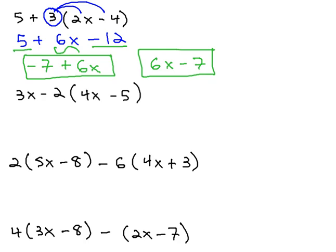This next example, 3x minus 2 times 4x minus 5, will follow the same exact pattern. We just must remember that the negative comes with the 2 that we're distributing through the parentheses. So we have 3x, and negative 2 times 4 is negative 8x. Negative 2 times negative 5 is positive 10.